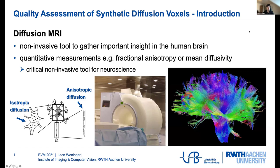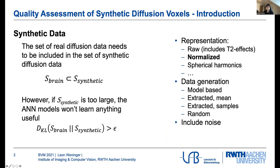However, the data we get is always limited, and as such we would like to use synthetic data to, for example, train neural networks or analyze more data than we actually have from measurements. The synthetic data needs to comprise all the actual brain data distribution. We also want the distribution of the synthetic data to not be much larger than the distribution of data in the brain, because otherwise neural networks or other tools won't be able to extract useful information.